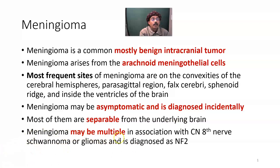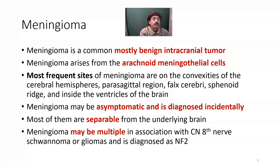Meningioma may be multiple and in association with the 8th cranial nerve — that is the vestibulocochlear nerve — schwannoma or glioma, which is a tumor of the neuroglia, and is diagnosed as neurofibromatosis type 2. It may also have another mutation: the NF2 gene on the long arm of chromosome number 22.